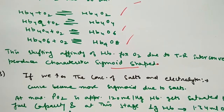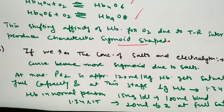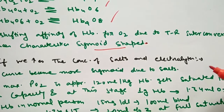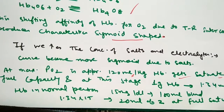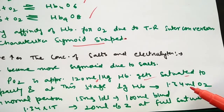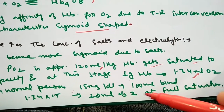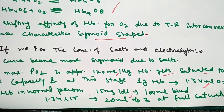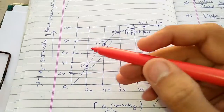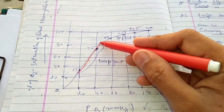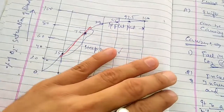If we increase the concentration of salts and electrolytes in the blood, the curve becomes more sigmoid. At maximum partial pressure of 120 mmHg, hemoglobin is fully saturated. One gram of hemoglobin carries 1.34 ml of oxygen. In a normal person there is 15 g of hemoglobin, so multiplying 1.34 × 15 gives approximately 20 ml — meaning hemoglobin can transport about 20 ml of oxygen. The actual sigmoid curve of oxygen dissociation starts steeply, then flattens.